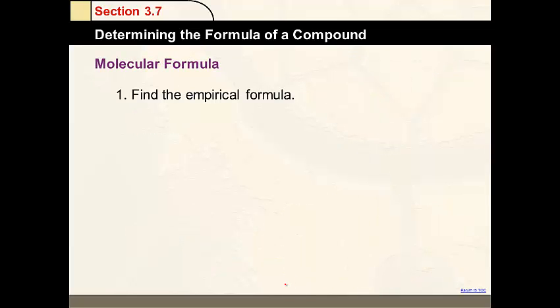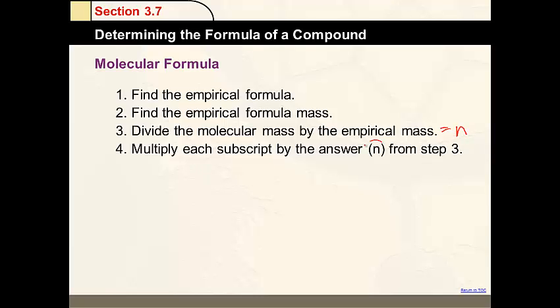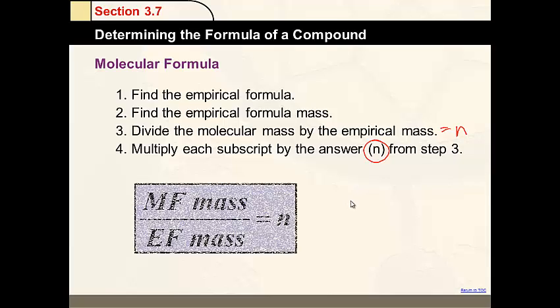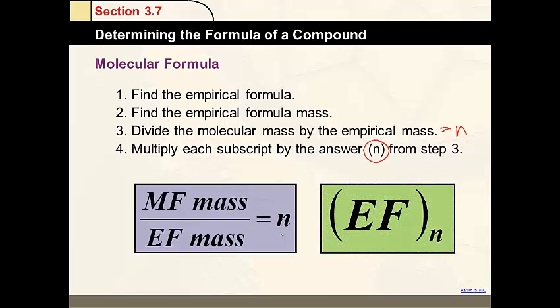In order to find a molecular formula's identity, we need to know what the empirical formula is first. We're going to also find the mass of the empirical formula. We'll divide the molecular formula's mass by the empirical formula mass. And then whatever we get from this, it should be an n value. We'll multiply each subscript by n. So molecular formula mass divided by empirical formula mass equals n. And we'll take that times our formula.